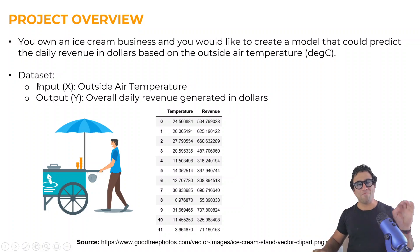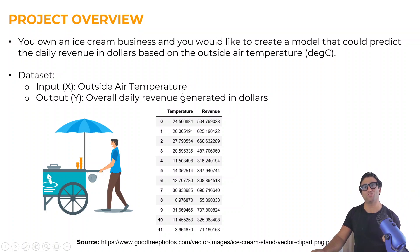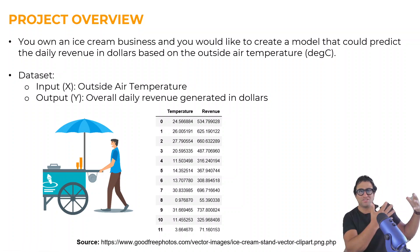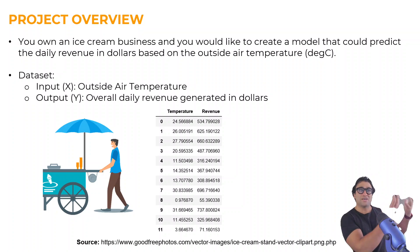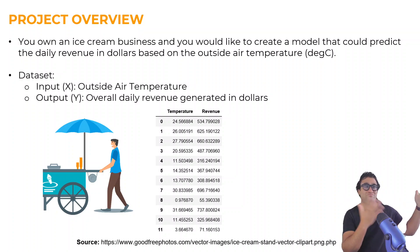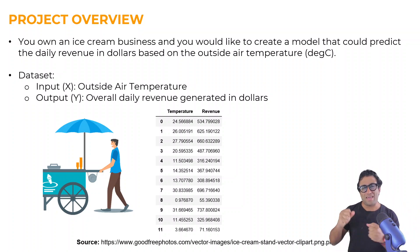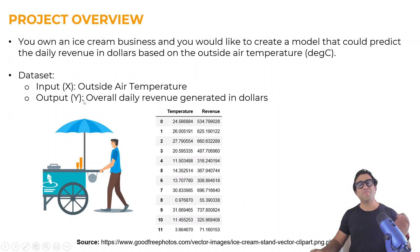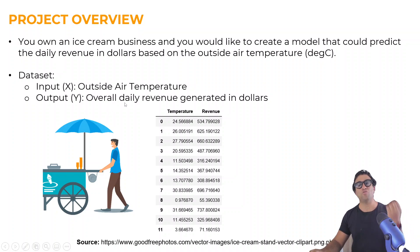The input to the model is the outside air temperature — this is what we call the independent variable, basically the variable that changes independently. Based on that temperature, we can gauge the output from the model, which is the daily revenue generated in dollars.